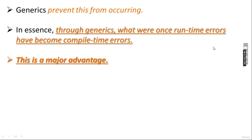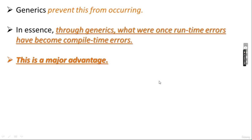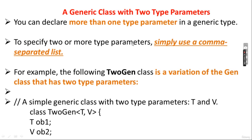In the previous video we saw that through generics we can prevent compile time errors. Type-safe code will be created using generics, in which type mismatch errors are caught at compile time. Whatever runtime errors now have become compile time errors — this is a major advantage of generics.